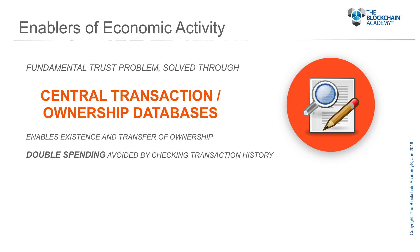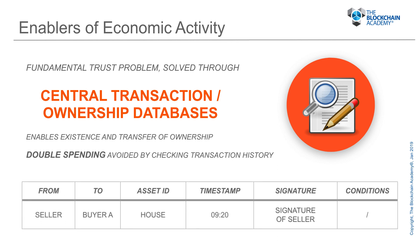This fundamental trust problem is traditionally solved through the use of central transaction or ownership databases. These central transaction databases enable the existence and transfer of ownership and ensure that double spending is avoided simply by checking the transaction history. So in the previous double spending example where I sold my house to buyer A and one hour later tried to sell it also to buyer B, that transaction would be blocked simply because the first transaction is already registered in the database.